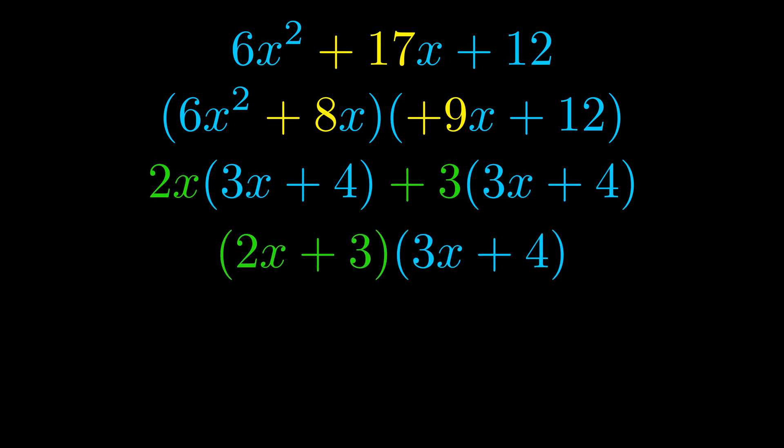The blue values are the same. Those blue values will become one of our factors and we will combine the two green values, the GCFs that we pulled out, to get the other one. And that is our fully factored equation.